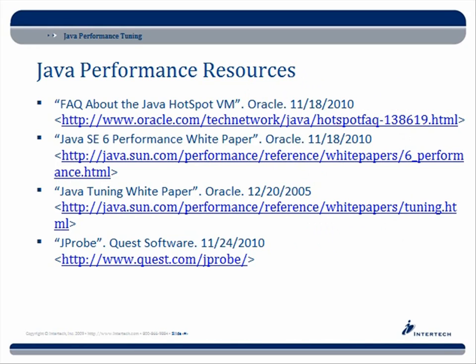Here are some of those resources that were mentioned. Most of these are Oracle white papers, written at a time when they were probably Sun white papers. There's Java Tuning, Java SE6 Performance, and FAQ about the Java HotSpot Virtual Machine. These are recommended reads — they're not long, but they're extremely informative.